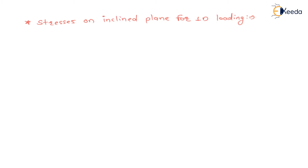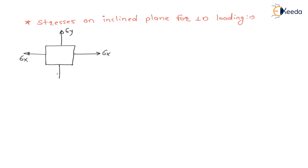In the previous lecture, we have seen stresses on inclined plane and the same formulas we are using here. Let us consider 2D loading. Here, this is the stress sigma x along x axis on x plane. This is the stress sigma y, and let us say there is also shear stress tau xy on the element.